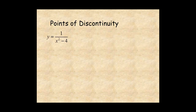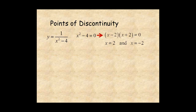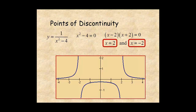For the function y equals 1 over x squared minus 4, when you set the denominator equal to 0, you have the equation x squared minus 4 equal to 0. This is the difference of squares, which factors into x minus 2 and x plus 2, and gives points of discontinuity at x equal 2 and x equal negative 2. Here is the graph of the function. You can see it is not defined at x equal negative 2 and x equal positive 2.